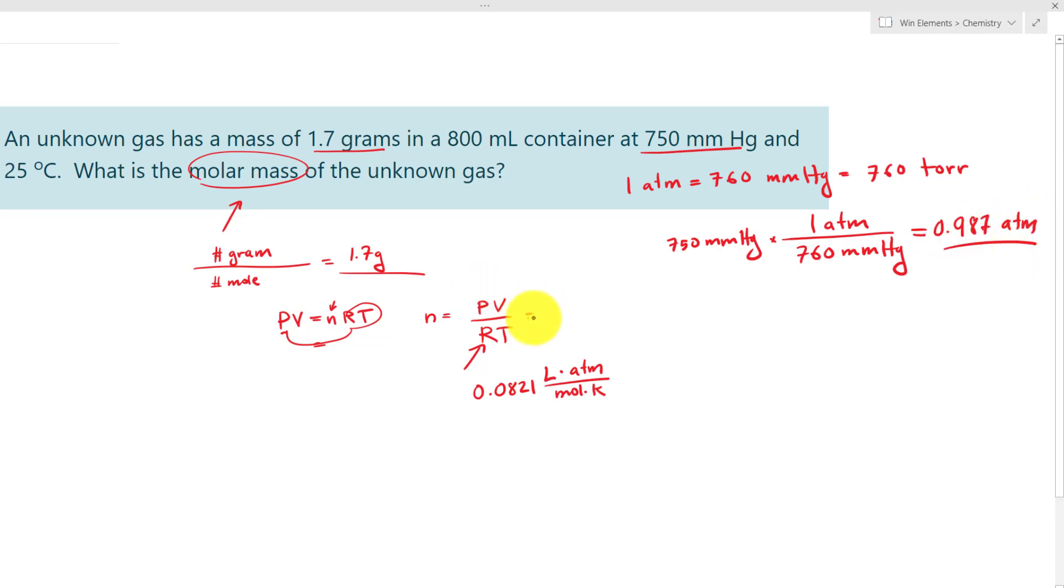So now we have the value for P, 0.987. Now the next step is volume. This is milliliter. We know that 1000 milliliters equals 1 liter. So we have 800 milliliters. Notice how I show you step-by-step unit conversion. By now you should know that to convert from milliliter to liter, you just divide by 1000.